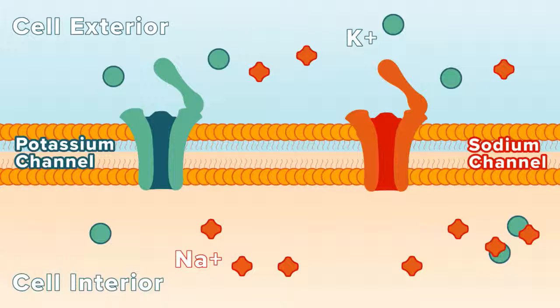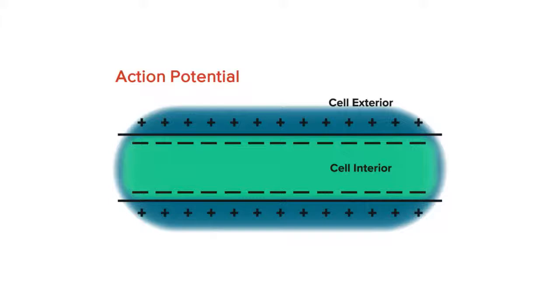If more positive ions are on the inside of the cell, this side will have an overall positive charge. Electricity is created by the sudden reversal of the overall charge of the inside and outside of the cell. This reversal or action potential produces the nerve impulse.